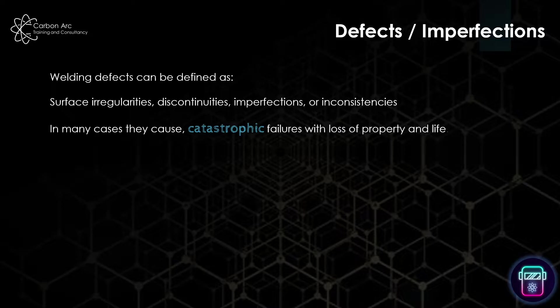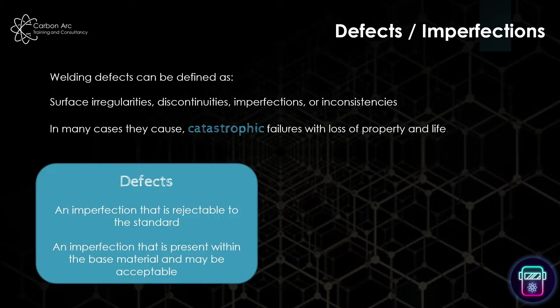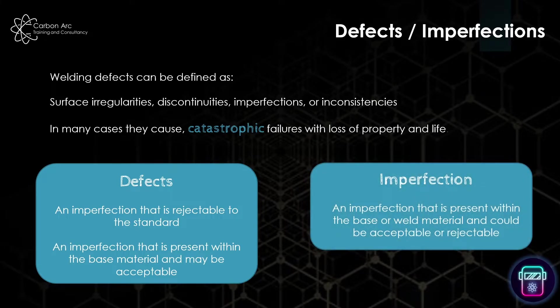First, the difference between defects and imperfections. In general, defects may cause failure of a weld. That can be catastrophic - a pressure vessel can explode and kill somebody, or we may lose an oil rig or valuable equipment. Generally we look at defects as being items which are rejectable to the standard, and an imperfection is something that could be in the base metal or weld metal but could be acceptable or rejectable.